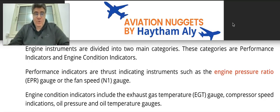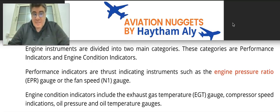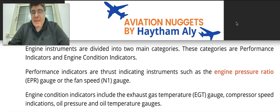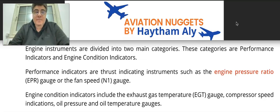Here you will know the list of parameters used to represent thrust — either EPR or N1. For example, the Airbus equipped with the V2500 engine uses EPR as the primary engine indication parameter. On the other hand, CFM engines like the CFM56-5B use N1, the low pressure rotor speed, for thrust measurement.